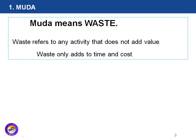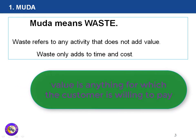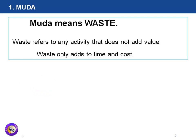Let's learn about these three M's in a little more detail. The first M is Muda, which means waste. Waste refers to any kind of activity which doesn't add value. Value means anything for which the customer is willing to pay — any activity the customer is not willing to pay for is not value. Ideally, in any organization we should be enhancing all value-added activities and eliminating non-value-added activities, as waste only adds to time and cost.